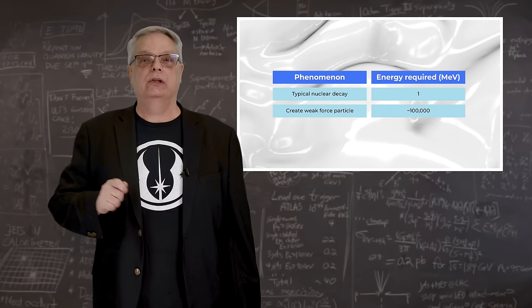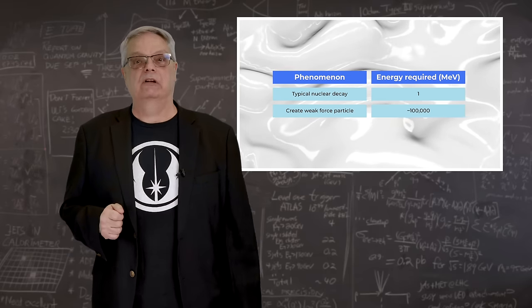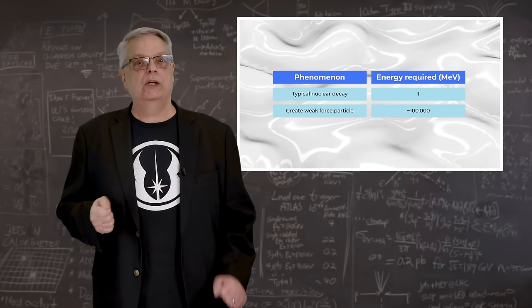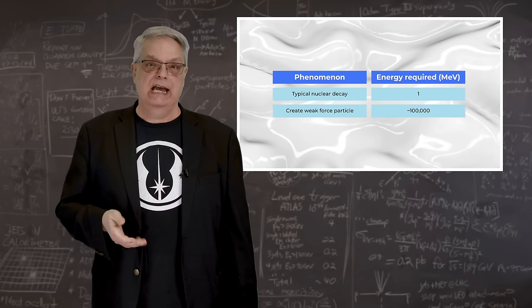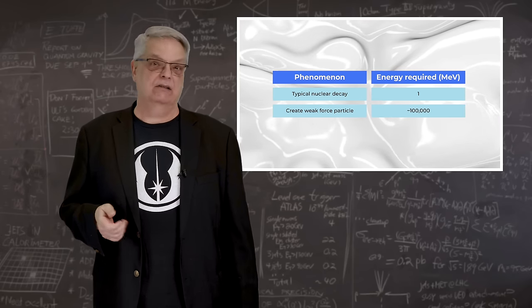In fact, for most nuclear decays, the energies involved are about one million electron volts. Don't sweat the units, just remember that most radioactive decay involves one, and in those units, the weak force particles would weigh in at about a hundred thousand.